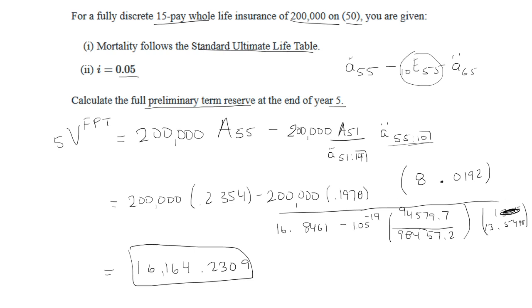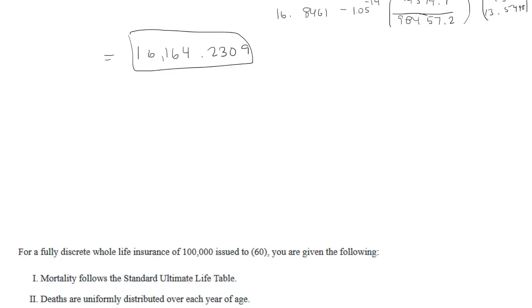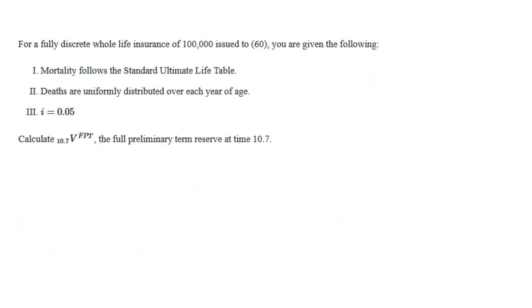Let's go to the next problem. We have a fully discrete whole life insurance of $100,000 issued to age 60. We can use the Standard Ultimate Life Table with UDD and an interest rate of 5%. We want to calculate the full preliminary term reserve at time 10.7.